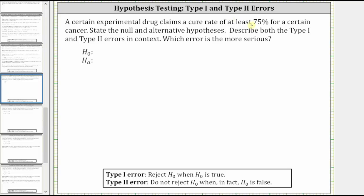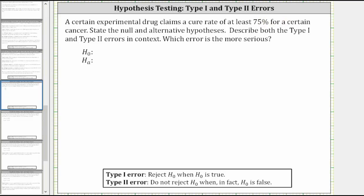A cure rate of at least 75% means a cure rate of 75% or higher, which we can indicate as P greater than or equal to 0.75. And if P is not greater than or equal to 0.75, then P is less than 0.75.